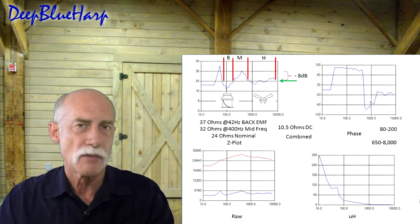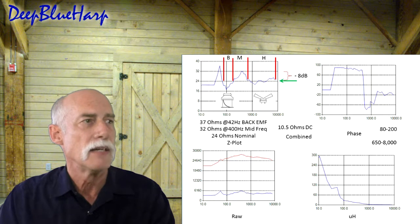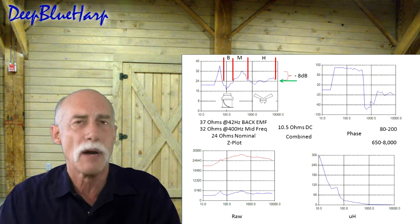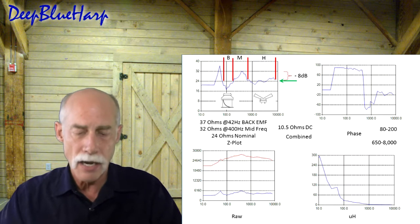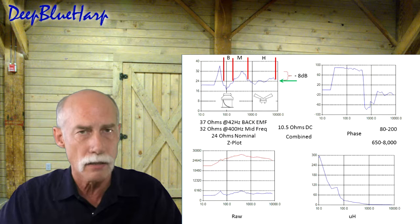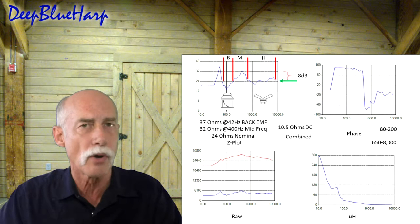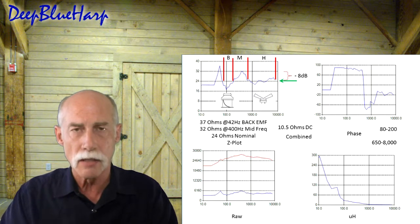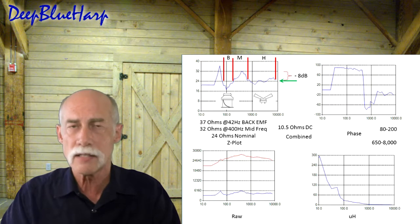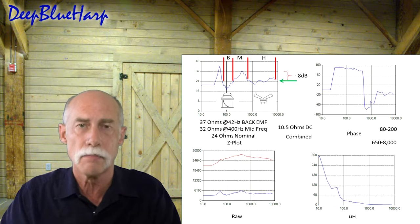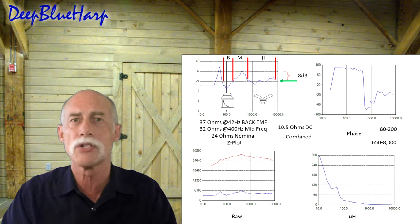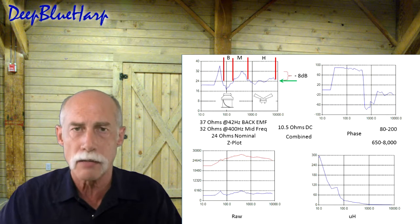I put them together and measured again. The overall back EMF is at 42 hertz or about 37 ohms. The combined DC resistance is at 10.5 ohms, but the nominal rating is 24 ohms. So if you were to put a dummy load on this unit, you would need to put at least 16 ohms DC, but you could go as far as 24 ohms DC, which would stress the unit just a little bit more, but that's where it's operating mostly.